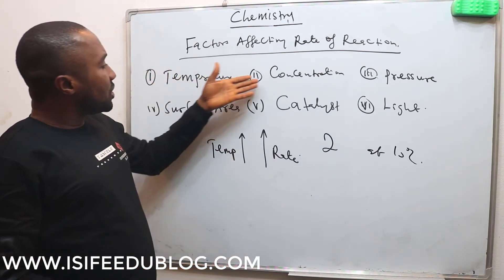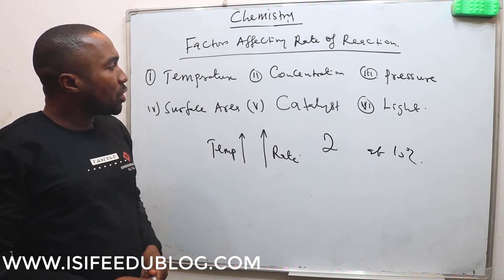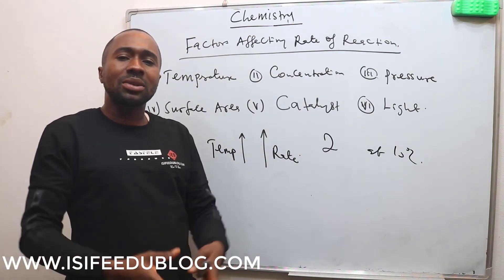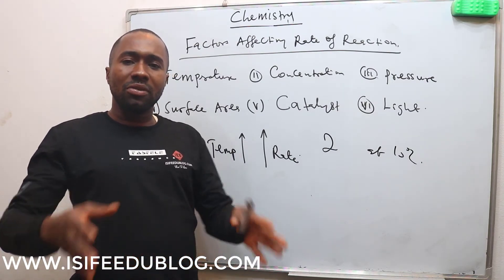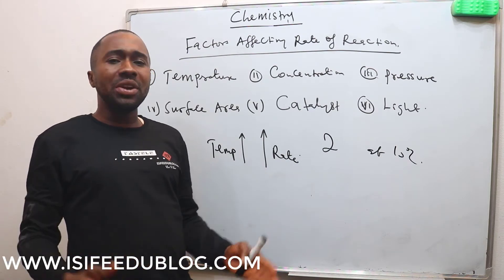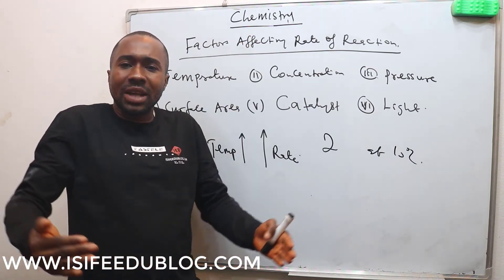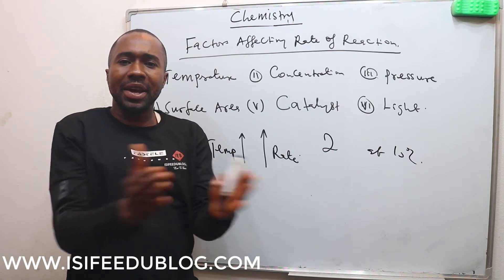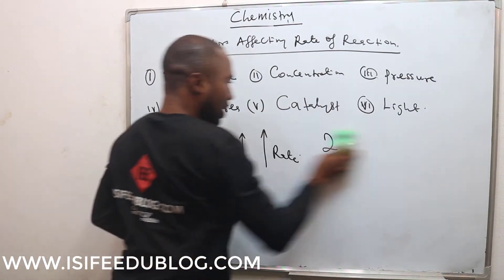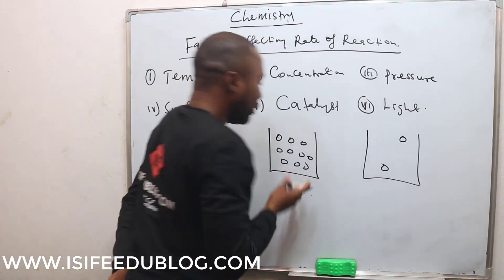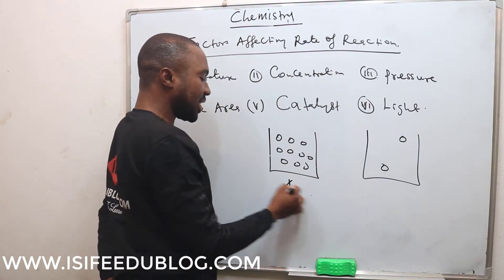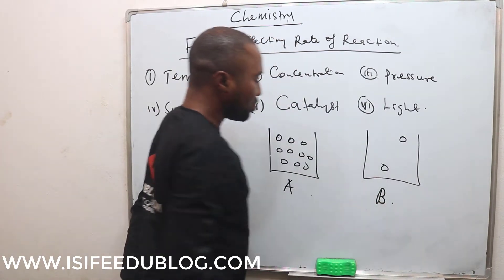The next is concentration. Concentration is talking about the number of reactant particles that are present — the number of reactants that are actually colliding to form a product. When the reactant concentration is high, it means the reactants are closer to each other and they can easily collide to form a product. Let's take for instance: the concentration in case A is higher than the concentration in case B.